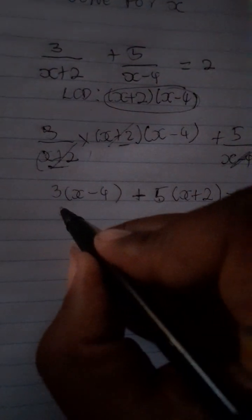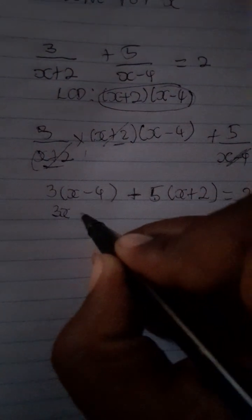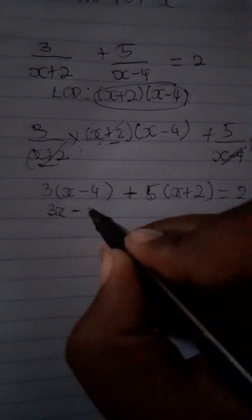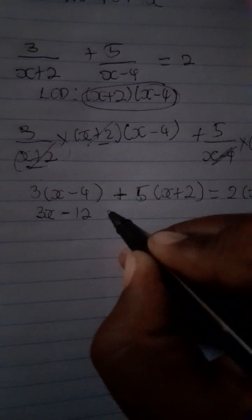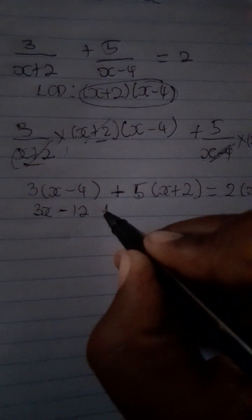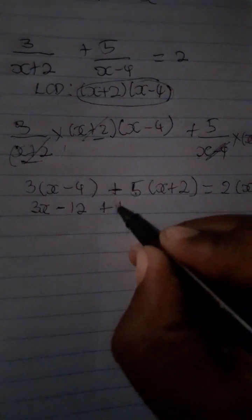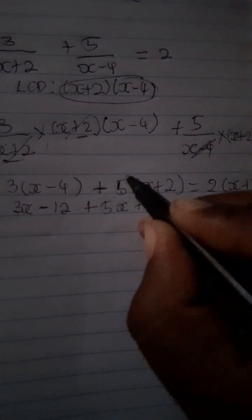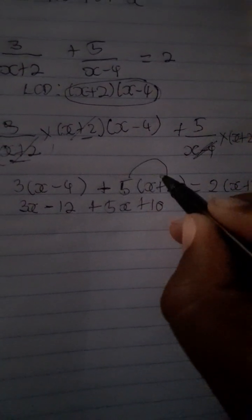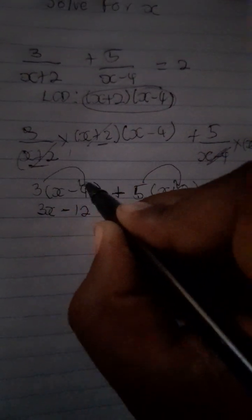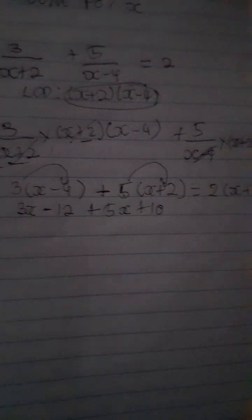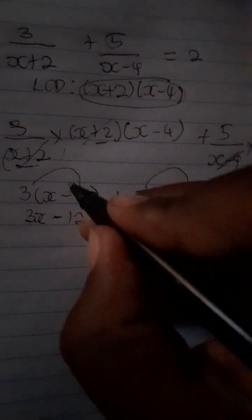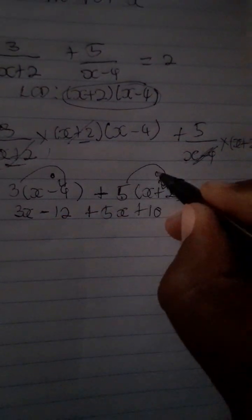Now let's work out the brackets. Three times x is 3x, and 3 times −4 is −12. Five times x is 5x, and 5 times 2 is +10. Remember, this multiplies this and this multiplies this — we use what we call the dolphin method. Math is interesting!